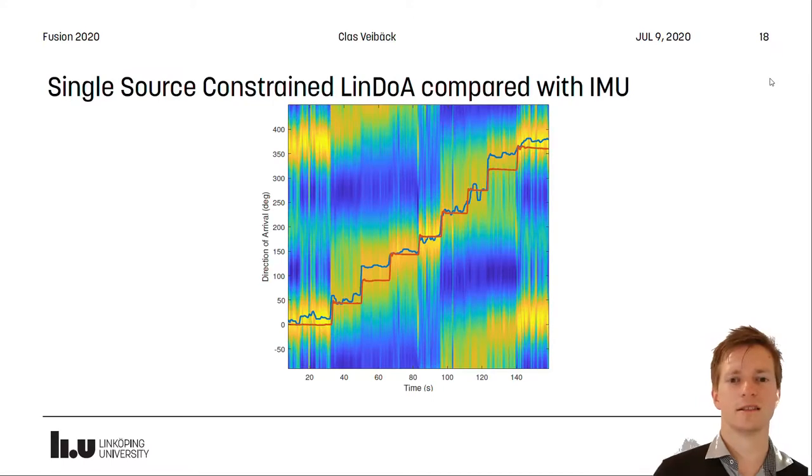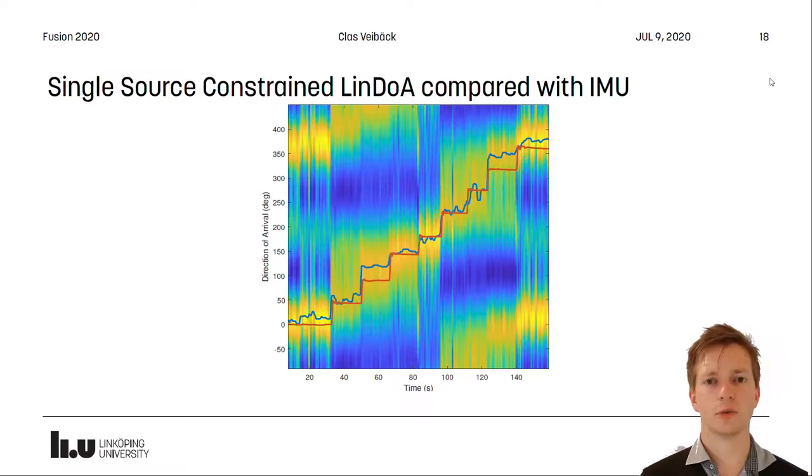Next, we look at a single source tracked by a constrained linearized direction of arrival and we compare it to an IMU estimate. So in this scenario we have a stationary sound source and a microphone array that is rotated 45 degrees at a time. And as we can see, the estimate is tracked quite well.